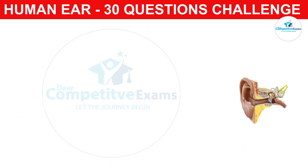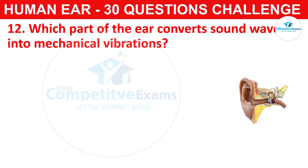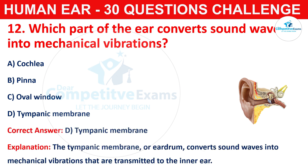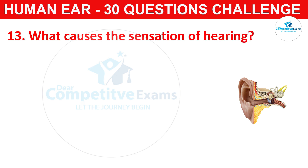Question number twelve: which part of the ear converts sound waves into mechanical vibrations? The correct answer is D, that is the tympanic membrane. The tympanic membrane, or eardrum, converts sound waves into mechanical vibrations that are transmitted to the inner ear.